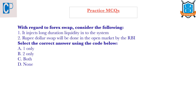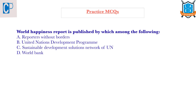Now let's see today's prelims questions. Regarding the forex swap: consider whether it injects long-duration liquidity into the system, and whether this rupee-dollar swap is done in the open market by RBI. The next question: the World Happiness Report is published by which among the following — Reporters Without Borders, United Nations Development Programme, Sustainable Development Solutions Network of the UN, or World Bank? Try to answer these questions and post your answers in the comment box. In tomorrow's video we'll see an explanation for these questions. Thank you.